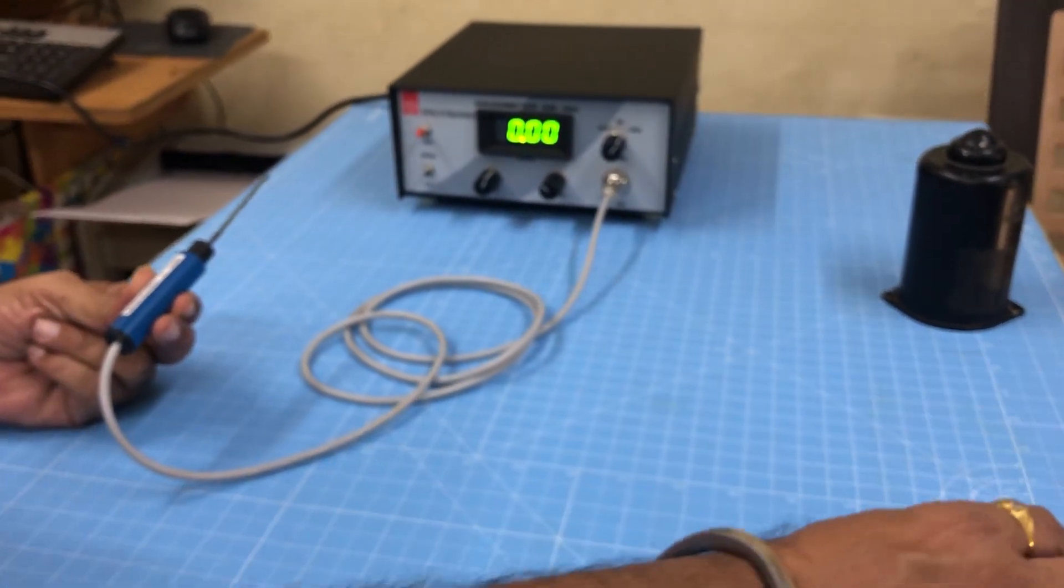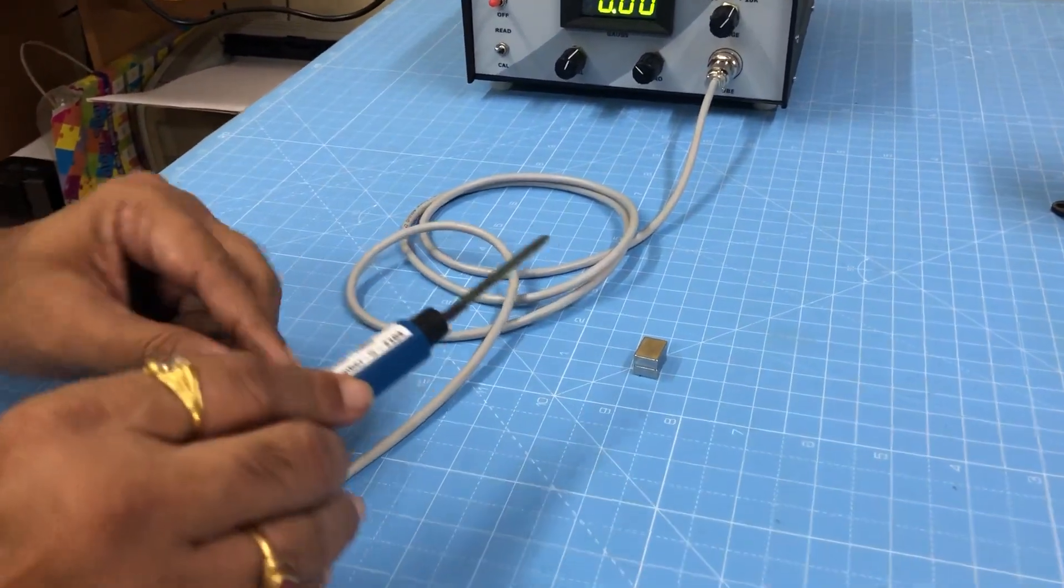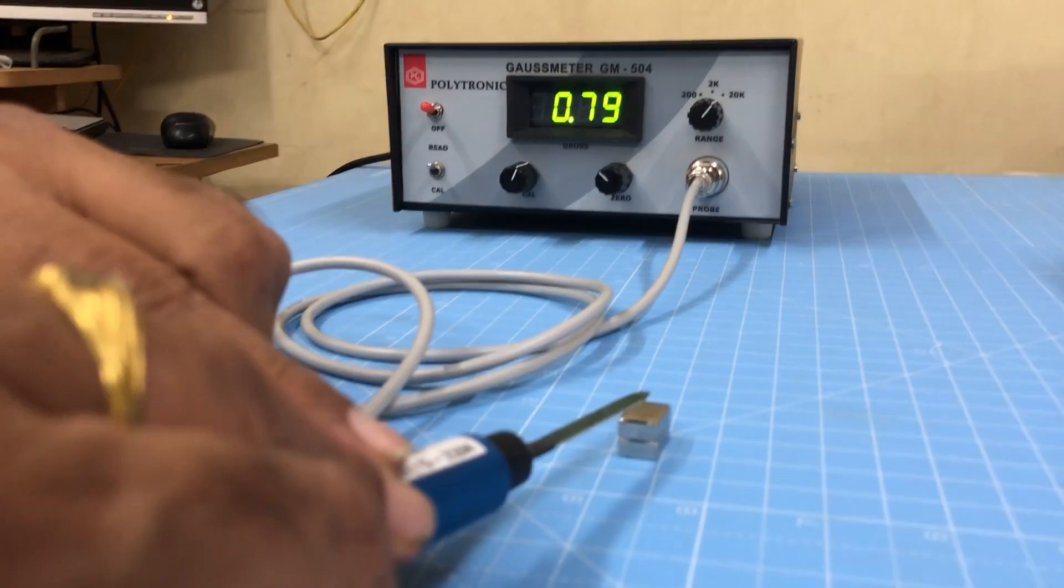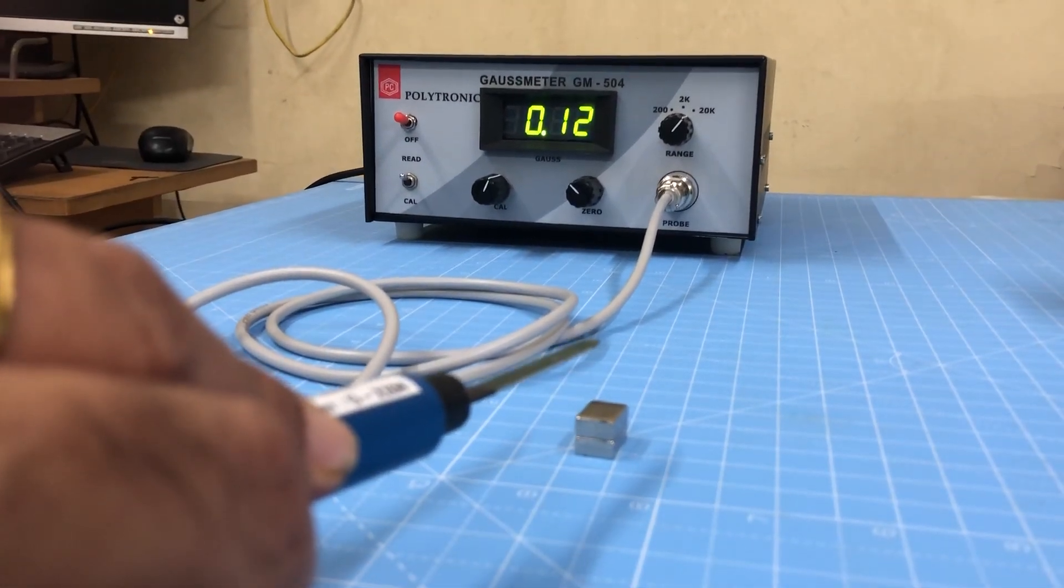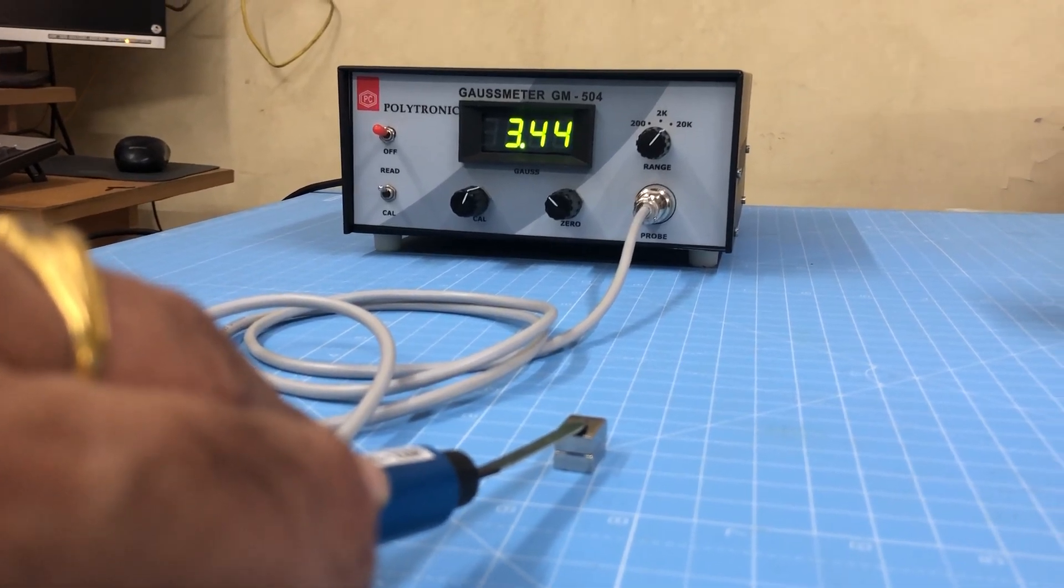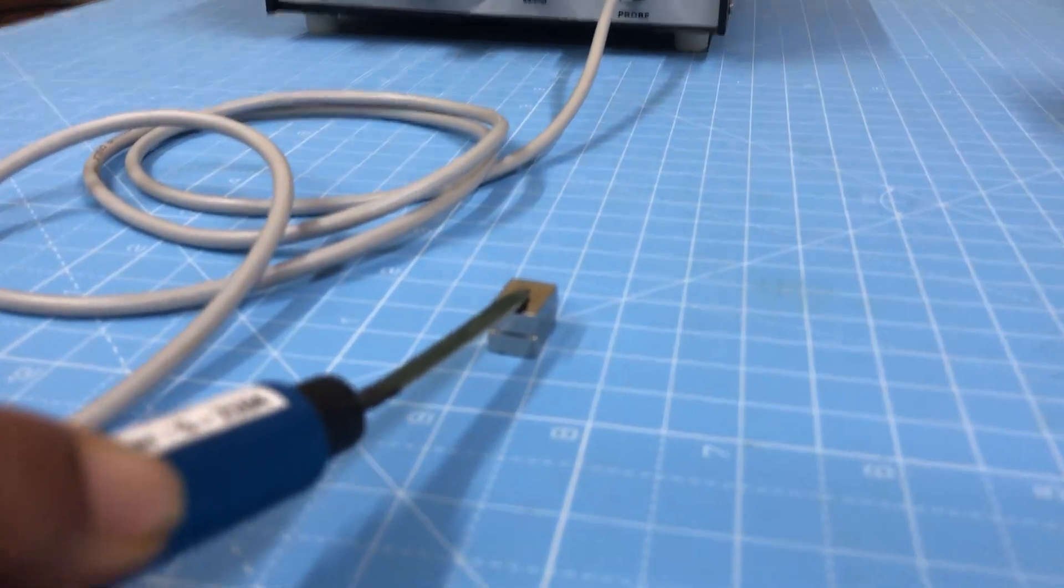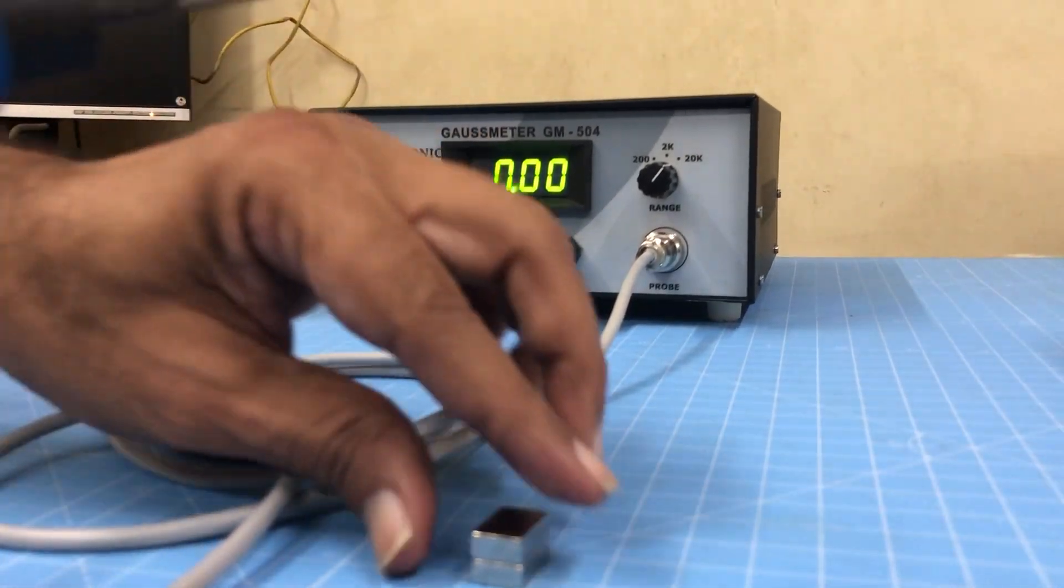Now we will make the measurement on the surface of the rare earth magnet. You can put the probe directly on the surface. It reads about 3.4 kilogauss.